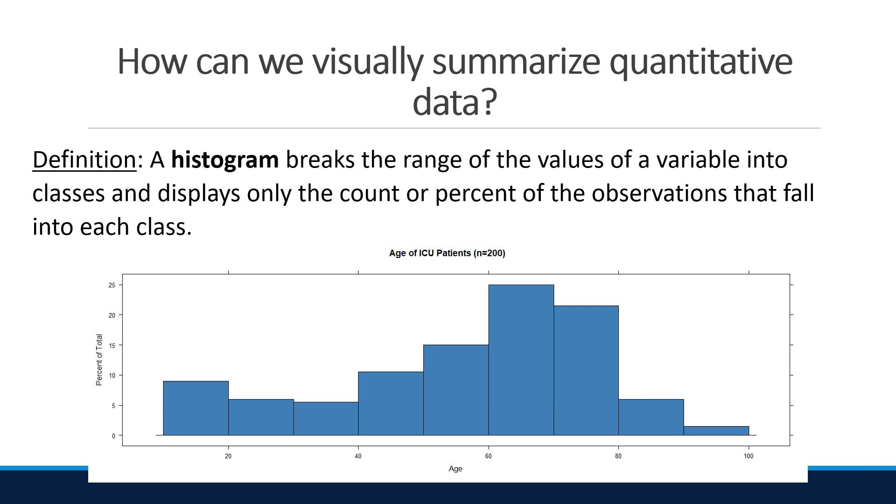A histogram breaks the range of the values of a variable into classes and displays only the count or percentage of the observations that fall into each class.